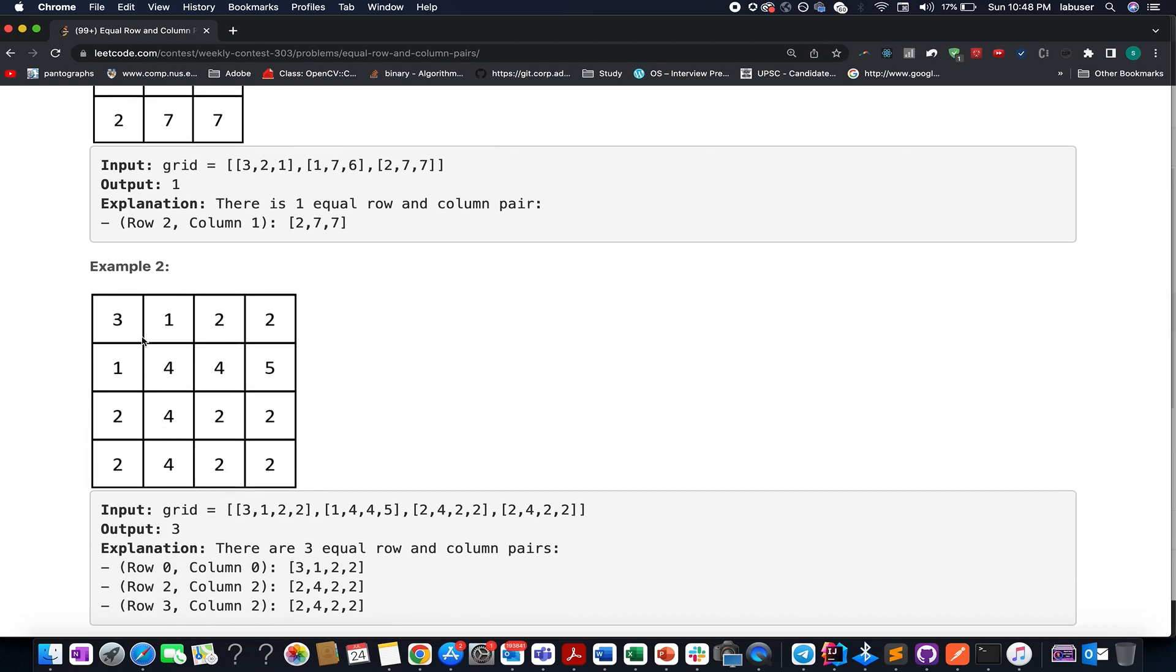Here we are given another matrix and here the count turns out to be 3. How? Let's try and understand. The first row that matches is 2422 with this one 2422. Again, we have a duplication 2422 matches with this one 2422. So far we have identified two such combinations, and the third one is 3122.